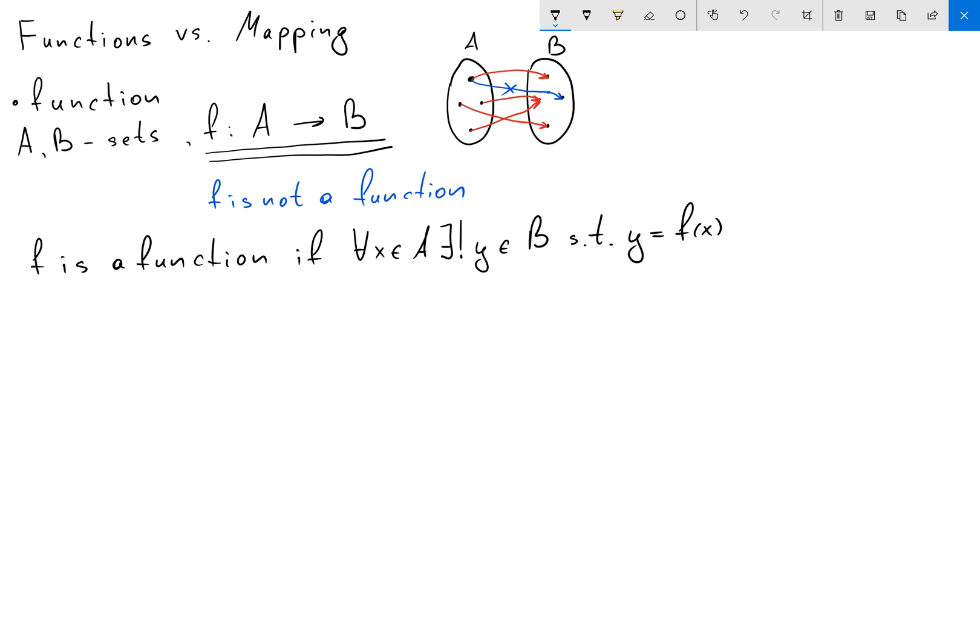So basically what I'm saying is if I'm going to take any element x here, I can find only one arrow to element y in B.